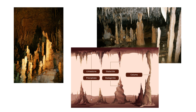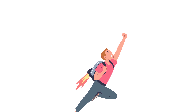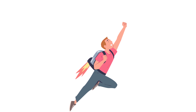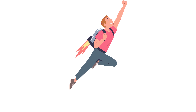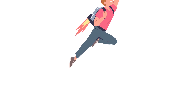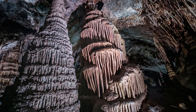Stalagmites and Heligmite: A stalagmite is a type of rock formation that rises from the floor of a cave due to the accumulation of material deposited on the floor from ceiling drippings. It is an upward growing mound of mineral deposits that have precipitated from water dripping onto the floor of a cave. Ones that extend horizontally or diagonally from stalagmites are known as heligmites.